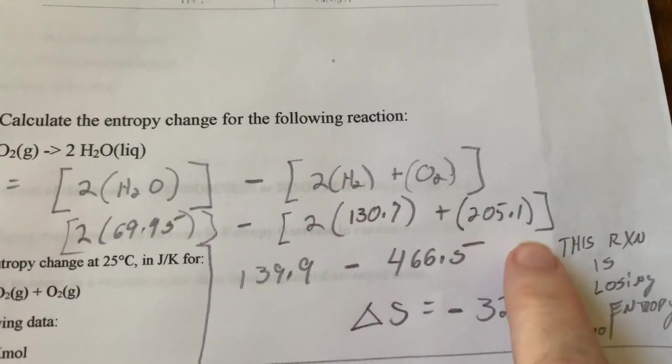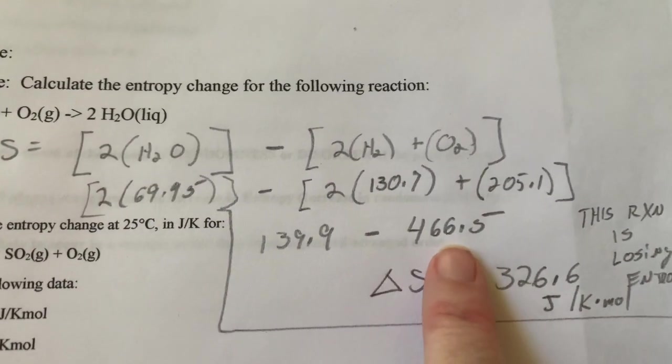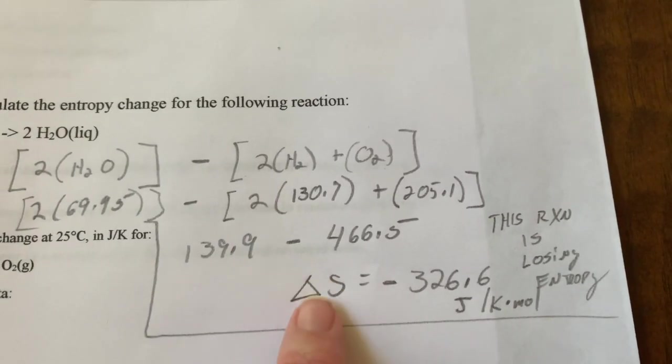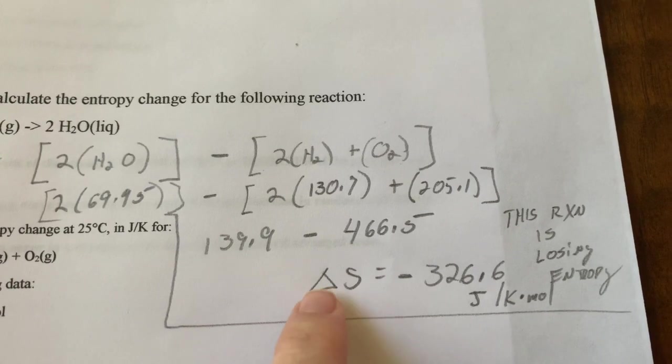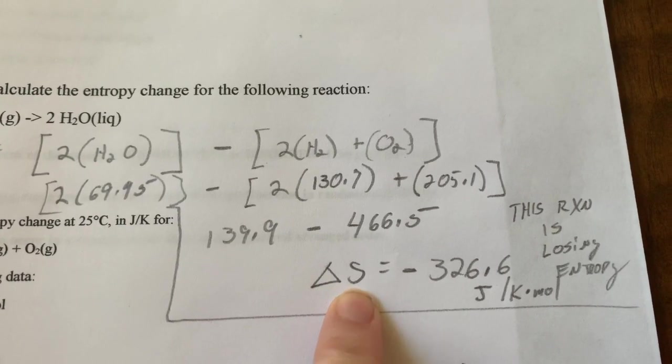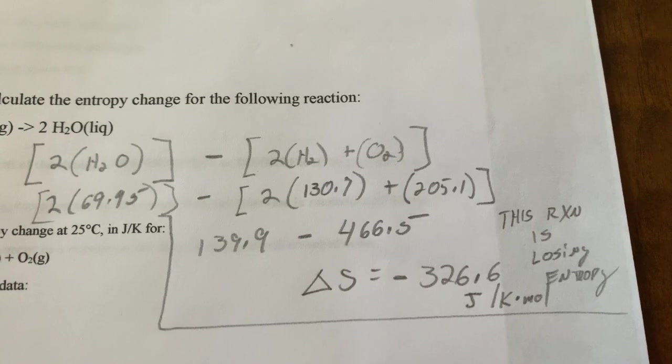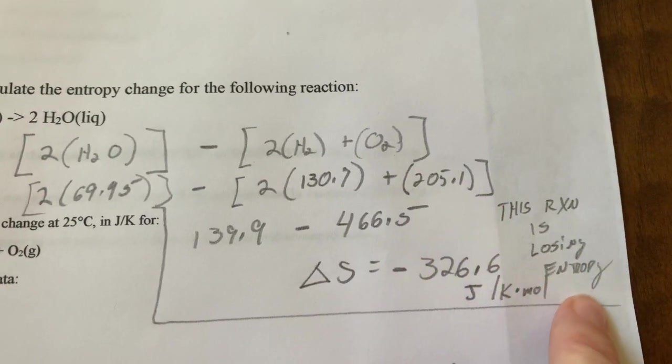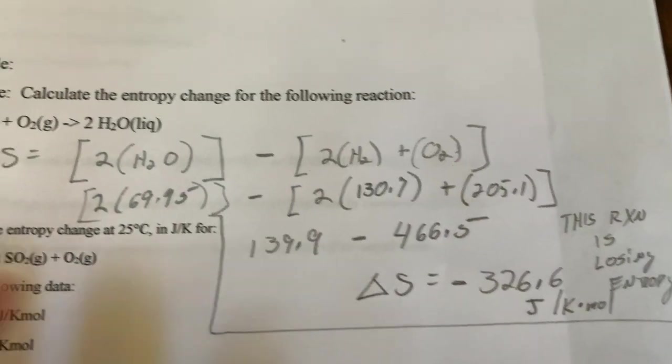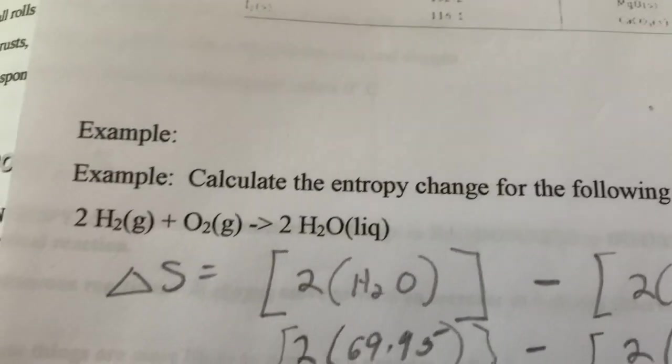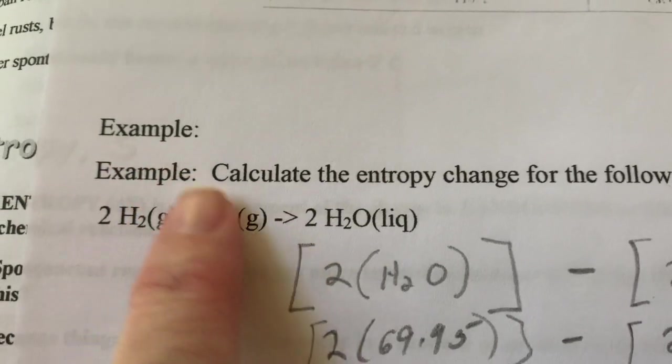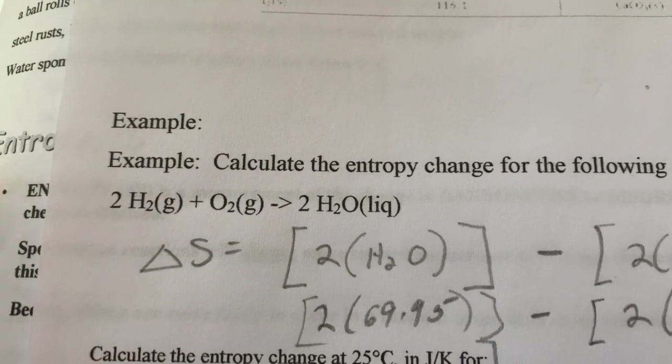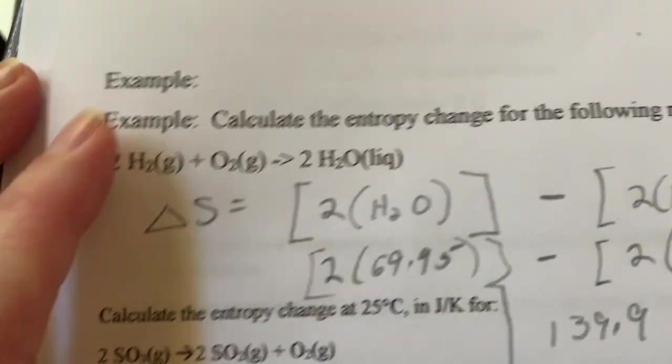Hopefully my math is all correct. When you figure it out, you find that the delta S for this is a negative value, it's about negative 326. Because it's negative, it means that the reaction is losing entropy, it's becoming more ordered. We could have predicted that from the beginning actually because look, I'm taking gases and I'm turning them into a liquid. So that's a situation where you are certainly becoming more ordered.